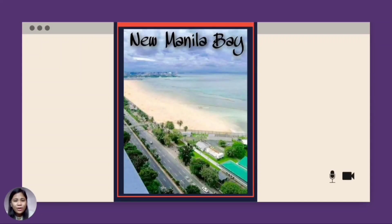Like other ecosystems, estuaries and intertidal zones need to be protected because of the presence of organisms that are dependent on their unique conditions. Our country is rich in different forms of ecosystems because of the presence of many rivers and long shorelines — like Manila Bay, which has both intertidal zones and estuaries. Humans should do actions that will not destroy but support the interactions of the organisms living in the area.